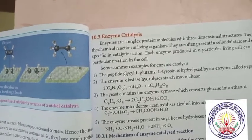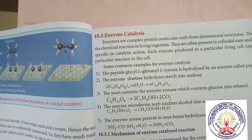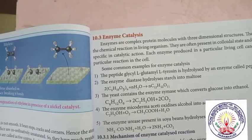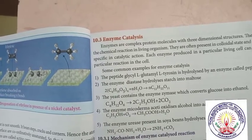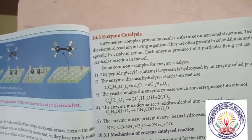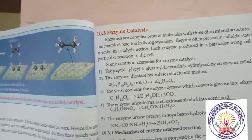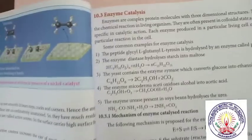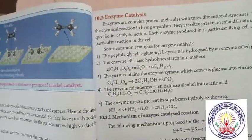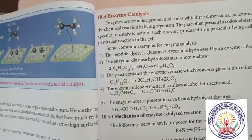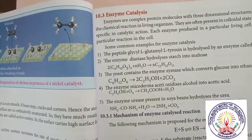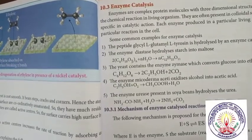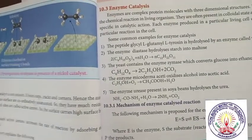The yeast contains the enzyme zymase which converts glucose into ethanol. The enzyme Mycoderma aceti oxidizes alcohol into acetic acid. The enzyme urease present in soy beans hydrolyzes the urea.